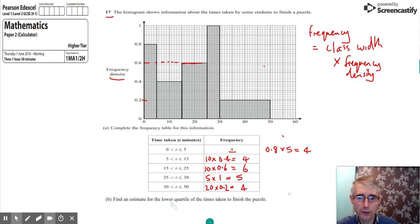If we now want to find an estimate of the lower quartile, the first thing that we need to do is work out the sum of all the frequencies. So by adding up this column, 4 plus 4 plus 6 is 14, plus 5 is 19, plus another 4 is 23. So we could say n, which is the number of pieces of data that we've got, is 23.